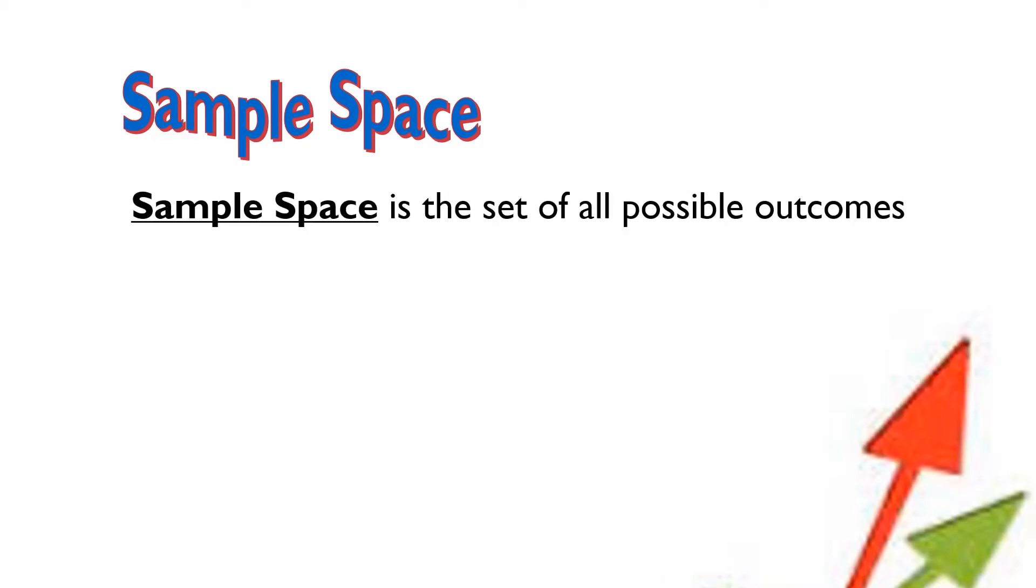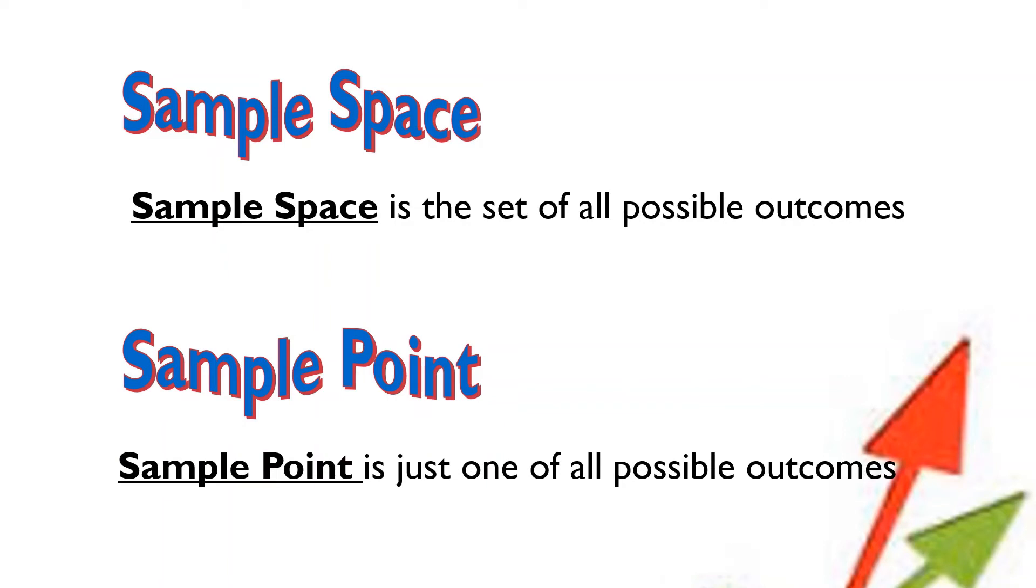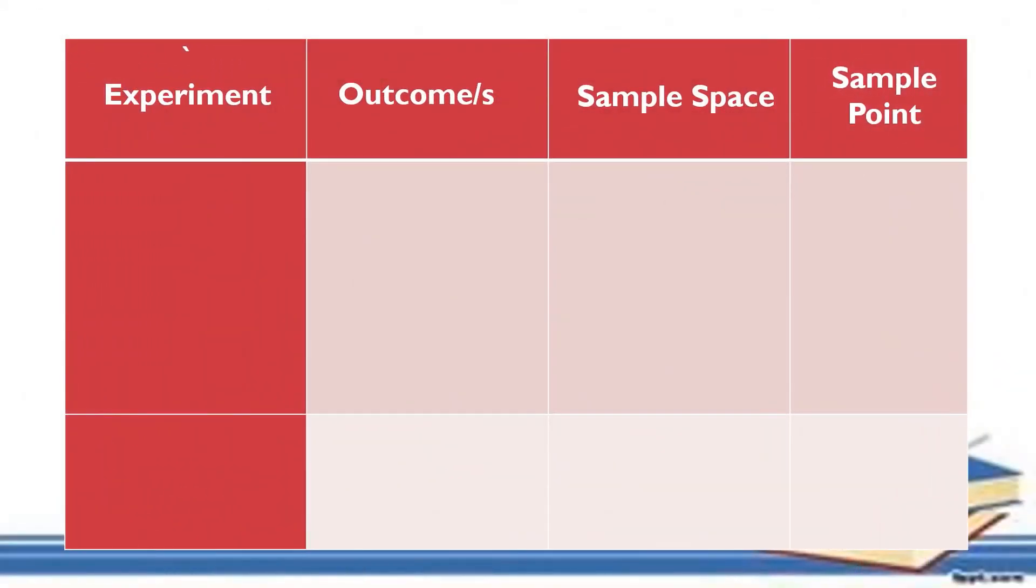Another term that we may encounter in the basic probability. We have the sample space and the sample point. For the sample space, it is the set of all possible outcomes. And the sample point is just one of all possible outcomes. Try here to look at the table. We have here the experiment, outcomes, the sample space, and the sample point. To flip a coin, we have the outcome, the head, and the tail. So, for the sample space, it is written as the set of the head and the tail. Or, you write it with bracket, then H and T. And the sample point, you may choose one of them. It could be the H or it could be the tail or the T.